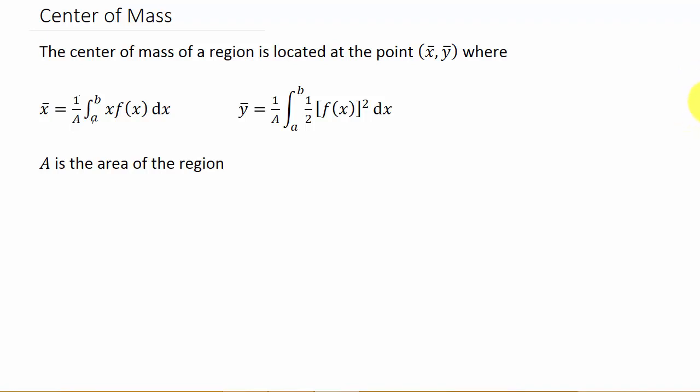Alright, so let's look at finding the center of mass of a region that might be defined by a function. So the center of mass of a region is located at the point x bar, y bar, where x bar is 1 over A times the integral from a to b of x times f of x dx. And y bar is 1 over A times the integral a to b of 1 half times f of x squared dx.